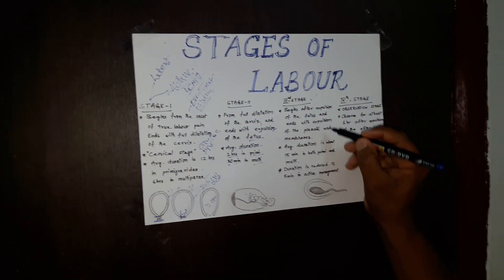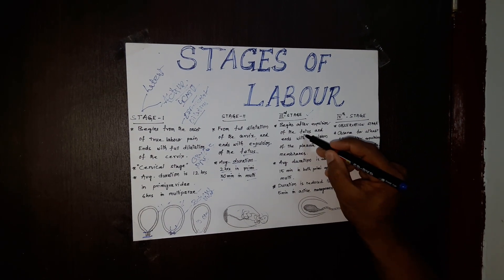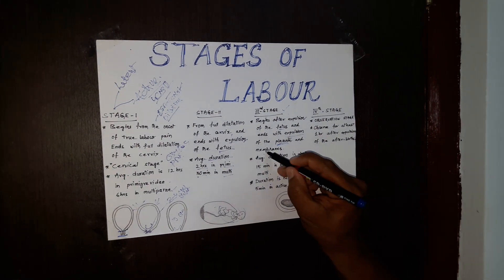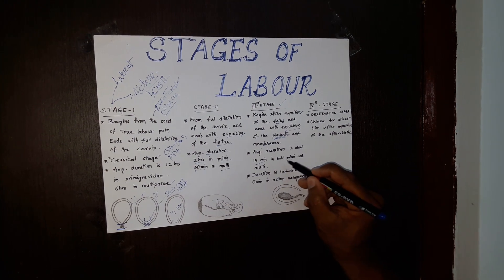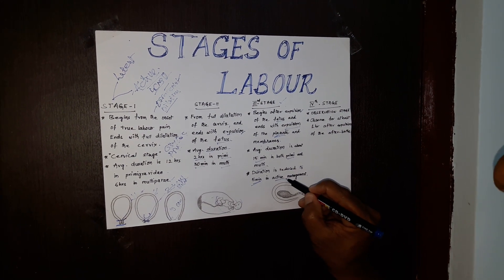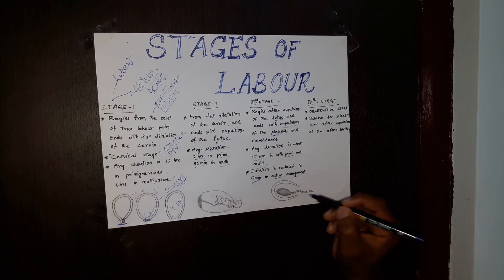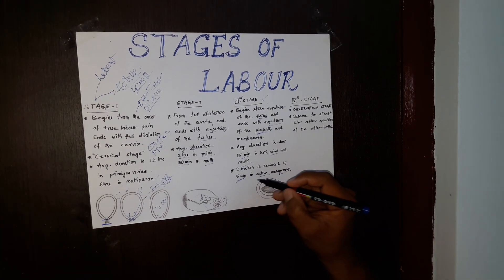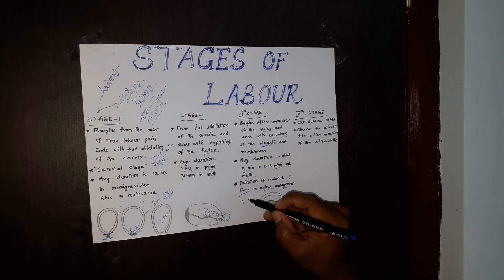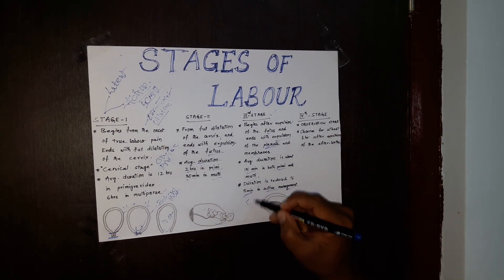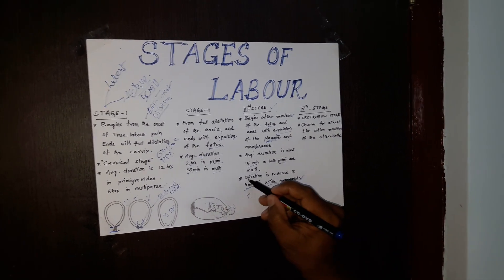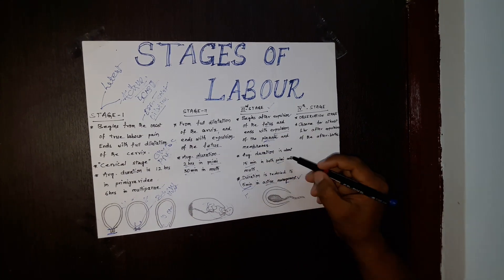Coming to the third stage: this begins after the expulsion of the fetus and ends with the expulsion of the placenta and membranes. The duration is about 15 minutes in both primi and multigravida, but it is reduced to 5 minutes by active management of the third stage of labour. Active management means giving oxytocin 10 units immediately after the birth of the baby to the mother, along with an abdominal or uterine massage. By giving a uterine massage and an oxytocin injection, you can reduce the time to 5 minutes.